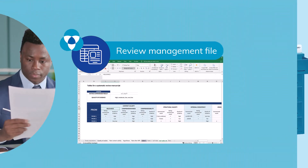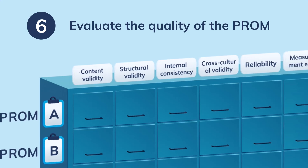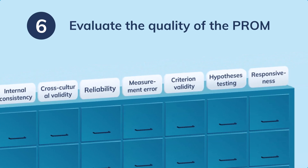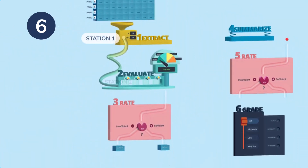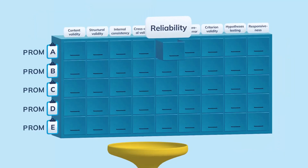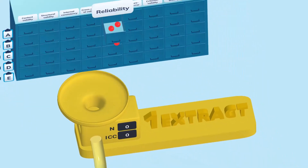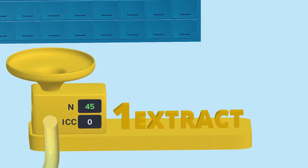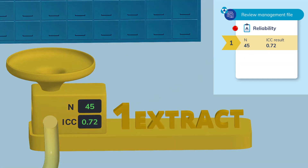You can use our COSMIN review management file to extract all your data during steps 5 and 6. In step 6, you look at each measurement property to evaluate the quality of the PROM. Within step 6, we have 6 stations that we repeat for each measurement property per PROM. For this example, we look at the 3 studies we found for reliability of PROM A. You drop one study from your drawer into the first station, where you extract the study details. We fill in the sample size and result of the study in the review management file.